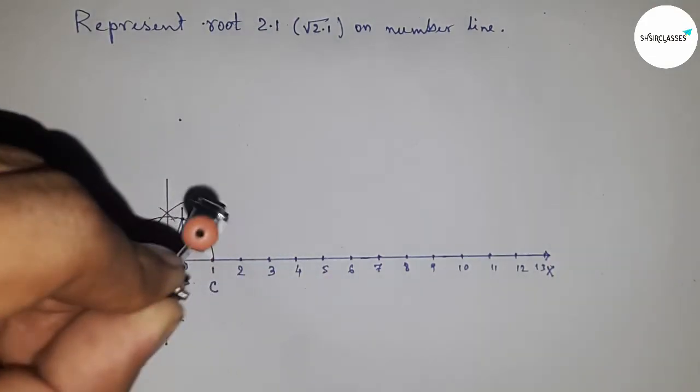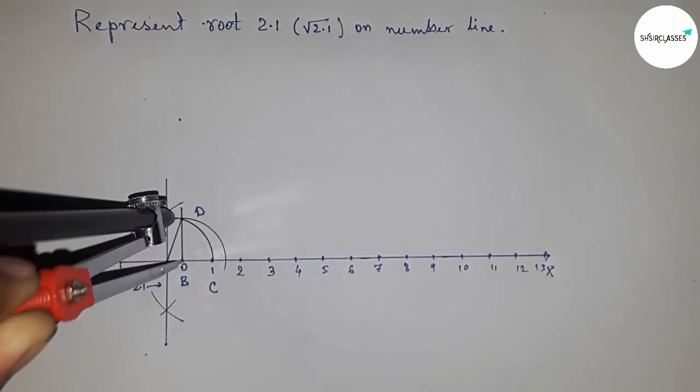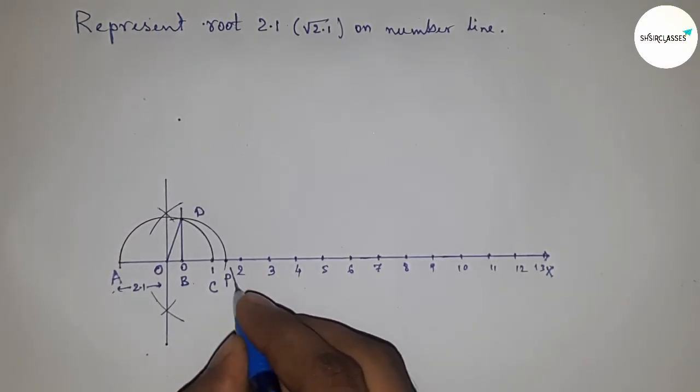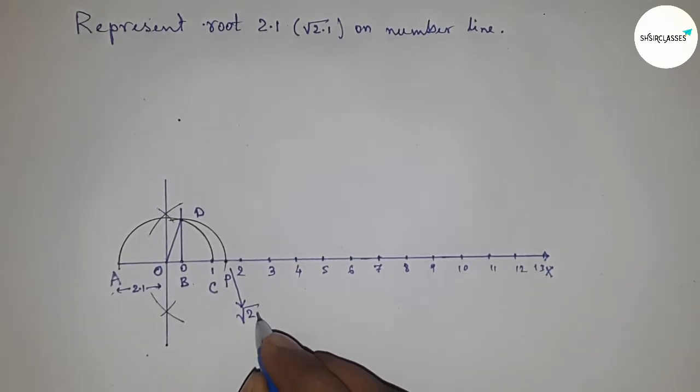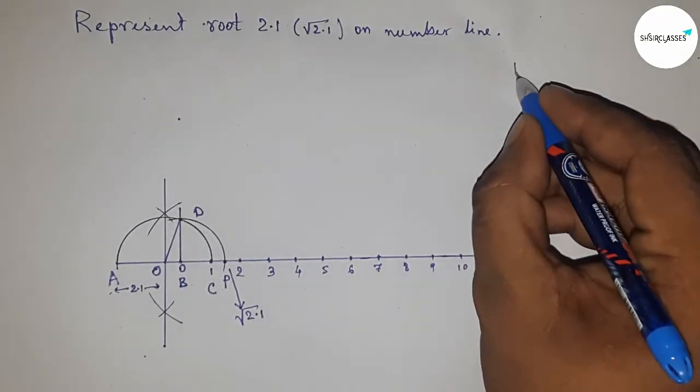Next I'm going to prove this. Draw an arc which meets the number line at point P. This is the representation of root 2.1 on the number line.